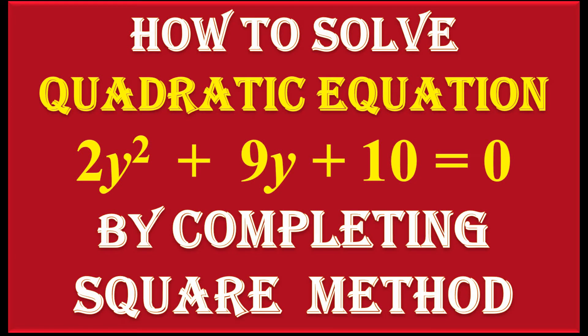Friends, now we have to solve the quadratic equation 2y² + 9y + 10 = 0 by completing the square method.